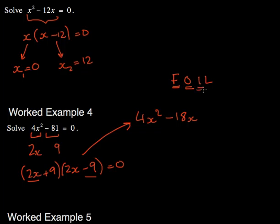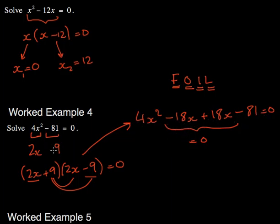The I stands for inner, which would be the two inner terms multiplied together, which is plus 18x. And the L stands for the two last terms, which are these two terms multiplied together, which is minus 81. And notice that these two terms just cancel out, but they give you 0 when you multiply them and add them together. So overall, you're left with 4x squared minus 81, and that's why this works.